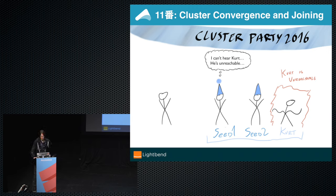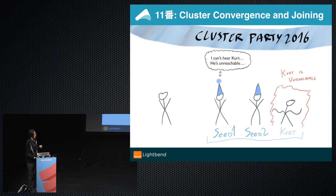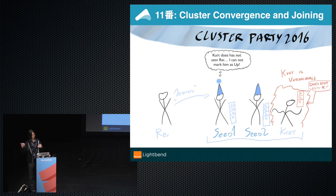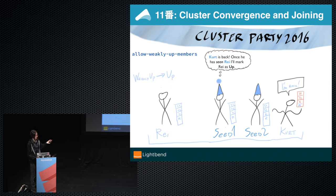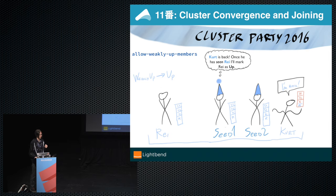Now about unreachability. We do periodic heartbeating — if a node doesn't respond to heartbeats, we declare it unreachable. But unreachable is not down; down is a very specific thing. To declare someone 'up' normally you need cluster convergence, but if one node is unreachable we can't tell everybody. This is where weakly-up kicks in: you're allowed to join in a special 'weakly up' state, so yes it is part of the cluster and can do everything a normal node would. Once the unreachable node comes back, we inform it about the new member and it is declared properly up.